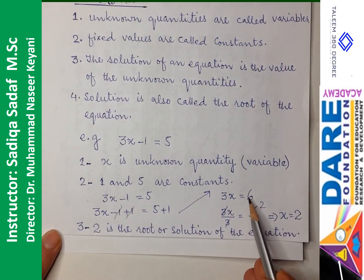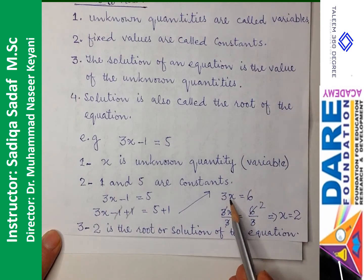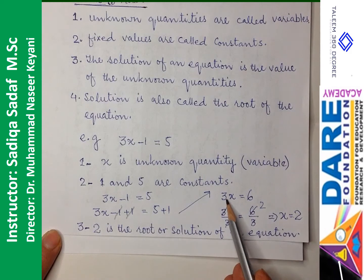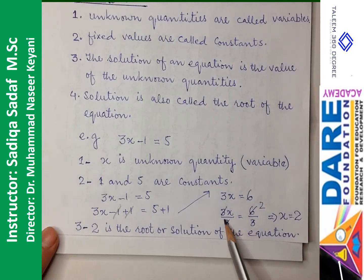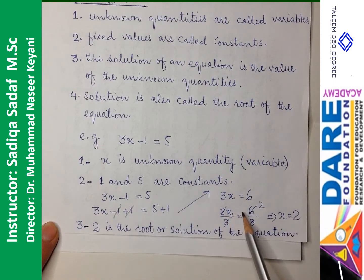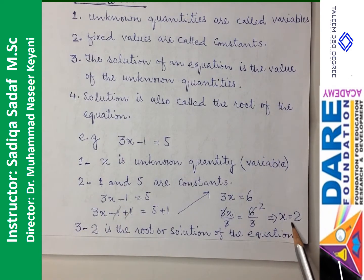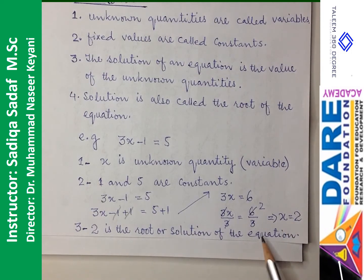3x is equal to 6. X ki value find karni hai — 3 aur x ke darmiyan multiply ka relation hai, aur multiply khatam karne ke liye divide istemaal kiya jaata hai. Dividing both sides by 3 — wahi amal ek taraf kiya, wahi doosri taraf bhi. 3 aur 3 cancel ho gaye. X is equal to 2. Yeh solution hai, aur yeh hi 2 is equation ka root bhi kahlata hai.